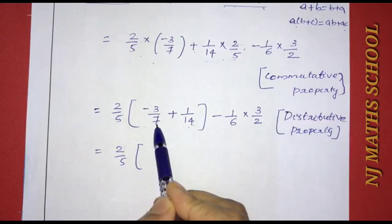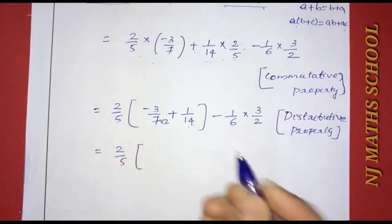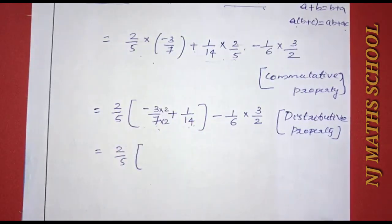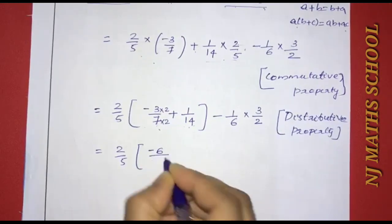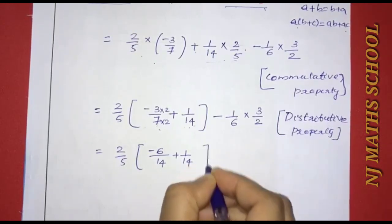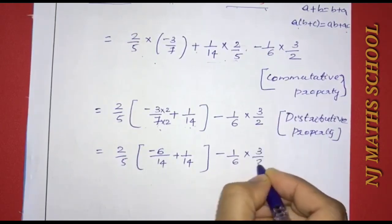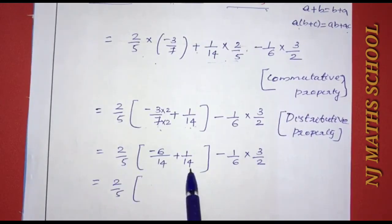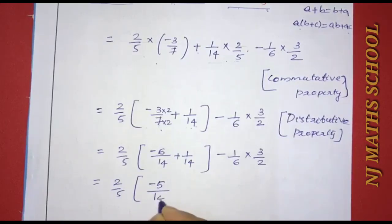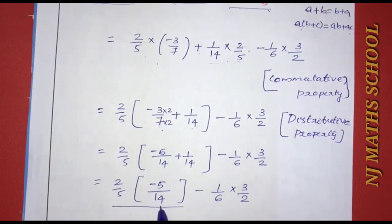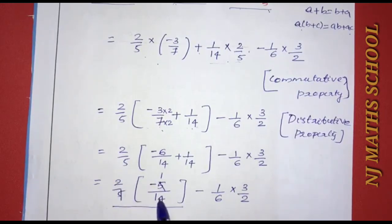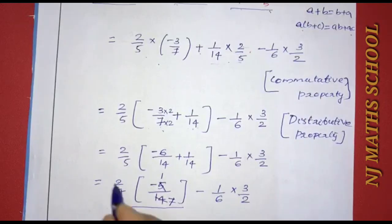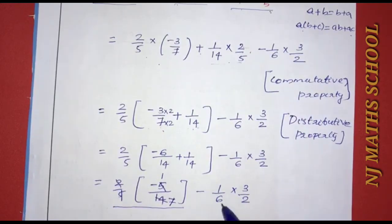14 is the LCM. 7 goes into 14 twice, so we multiply the numerator: minus 3 into 2 gives minus 6 divided by 14, plus 1 by 14. The denominator is the same, so minus 6 plus 1 equals minus 5 divided by 14. We get 2 by 5 into minus 5 by 14. The 5s cancel, giving minus 1 by 7.